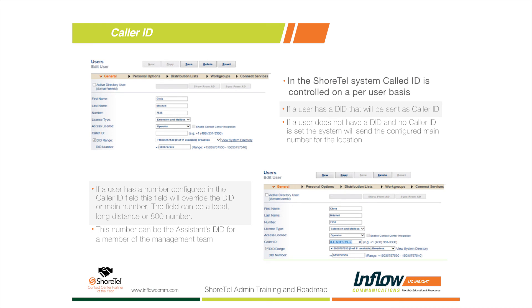The key thing to remember is that caller ID is controlled on a per-user basis — every user can have a different caller ID or the same one. It's managed from the admin interface: log into Server Director, expand Individual Users, select a user, and populate the caller ID field. As shown in the example, the field requires a +1 international format, including the US country code, and you can enter an 800 number, a local number, or a long-distance number.